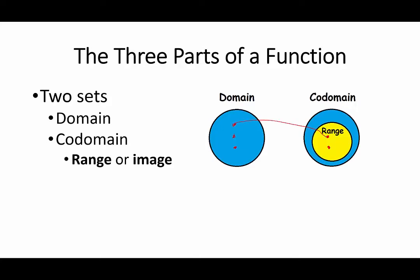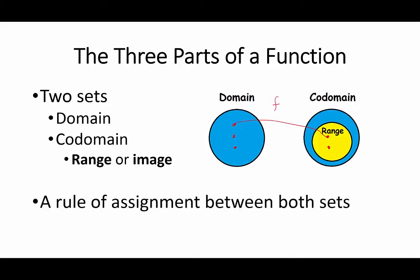And then we have a rule of assignment, let us call it F, that tells us how the elements from the domain are paired to the elements of the co-domain.